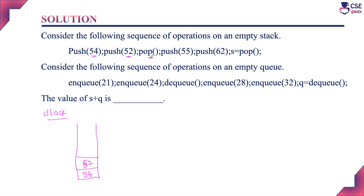Next we perform a pop operation. Element 52 is at the top of the stack. Since the element pushed last is popped first, 52 will be popped. So we pop 52 out of the stack.